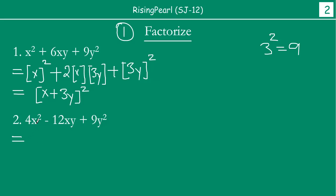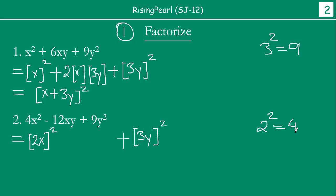In this next example, we realize that 4 can be written as 2², so the first term can be rewritten accordingly. Similarly, the last term can be written as (3y)², since 3² = 9. Now, in the middle we have a minus sign. We have two variables and a square, so we are thinking this is more along the lines of the (x − y)² format.